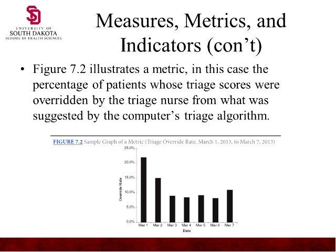Figure 7.2 illustrates a metric showing the percentage of patients with triage scores overridden by the triage nurse compared to what was suggested by the computer's triage algorithm. There was a big override that then fell down. It would be interesting to know if this was one triage nurse versus others, because if one nurse's triage differs from everyone else's, that would be a person problem, not a system problem.